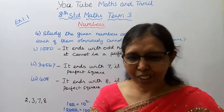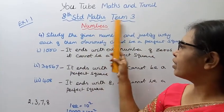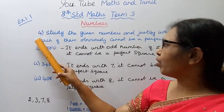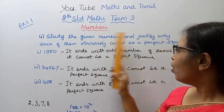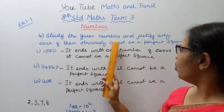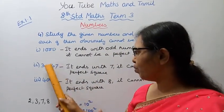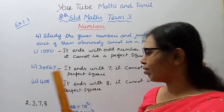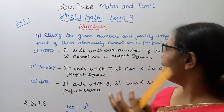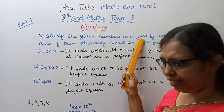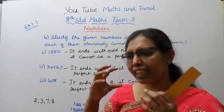Hello students, welcome to Max and Tumble channel. It's Telemax turn 3, exercise 1.1. Study the given numbers and justify why each of them obviously cannot be a perfect square. You have to justify — justify means we need to prove it.